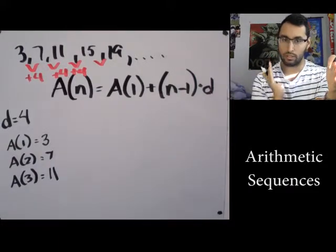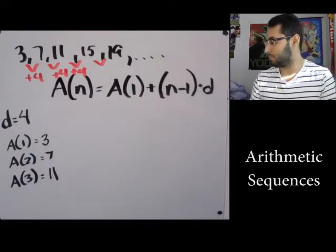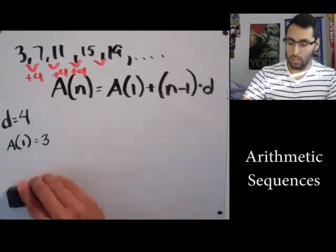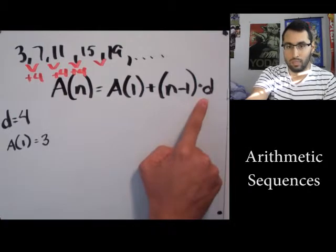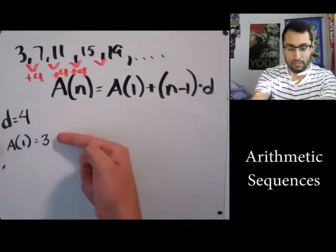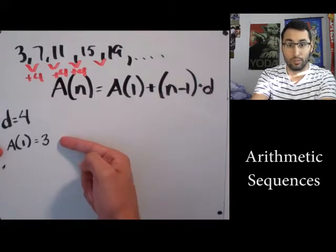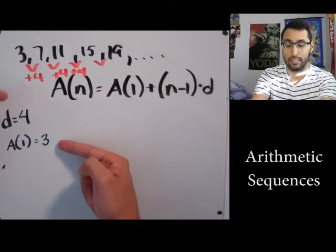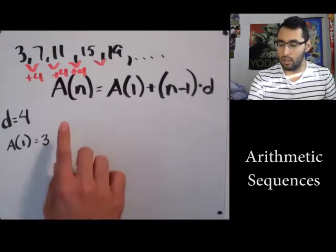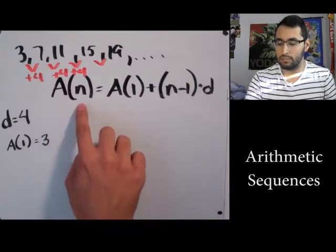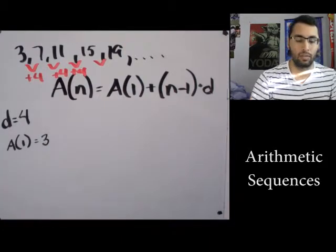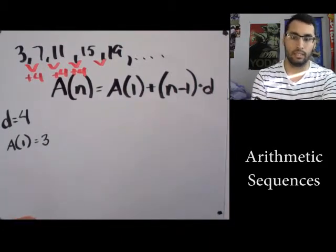So that's all we really need - A of whatever represents when I line up all these numbers, which one is it. So I need to know what is d, I need to know what is A(1). We have those two things: d is the pattern, A(1) is the first number. You always need your first number, in this case it's 3.